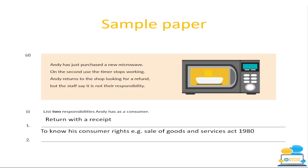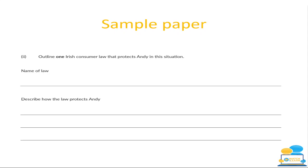Here's a sample paper question: list two responsibilities of a consumer. A scenario is given where someone just bought a new microwave, and on the second use the timer stops working. He returns to the shop looking for a refund, but staff say it's not their responsibility. His responsibilities: he's returned with a receipt and he knows his consumer rights. Under the Sale of Goods and Supply of Services Act 1980, the product is not of merchantable quality because it's not working — therefore he's entitled to a full refund.